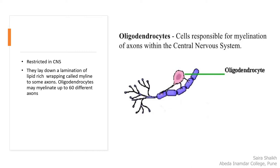The next cell is oligodendrocyte. They are very close to nerve cells. The pink color body in the picture is an oligodendrocyte. They are in close contact with the axon structure of the nerve cell. They secrete a secretion which is lipid in nature; this secretion is coated around the axon and forms the myelin sheath. Oligodendrocytes myelinate only the nerves present in the central nervous system.